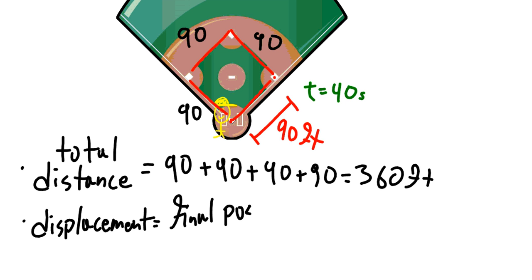So in the problem that we did, the person started at home base, ran around the bases, and ended up at home base. So if all we care about is where the person started and where the person finished, the person started and finished in the same spot.